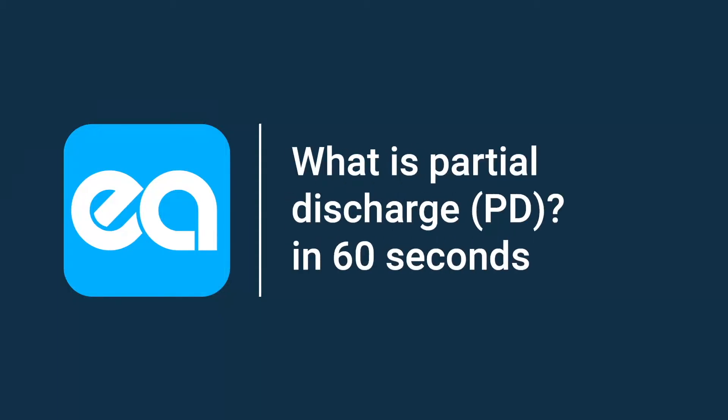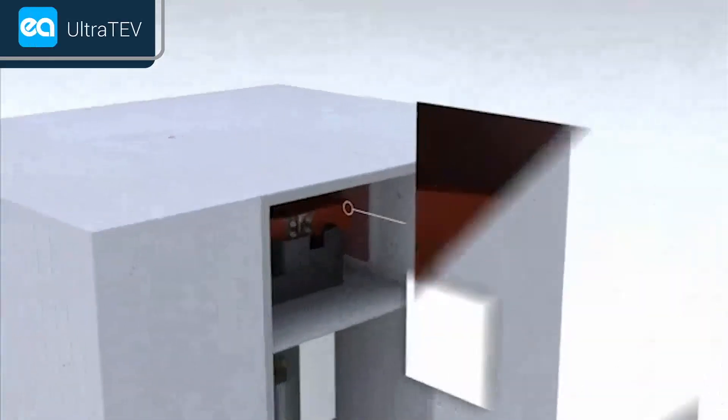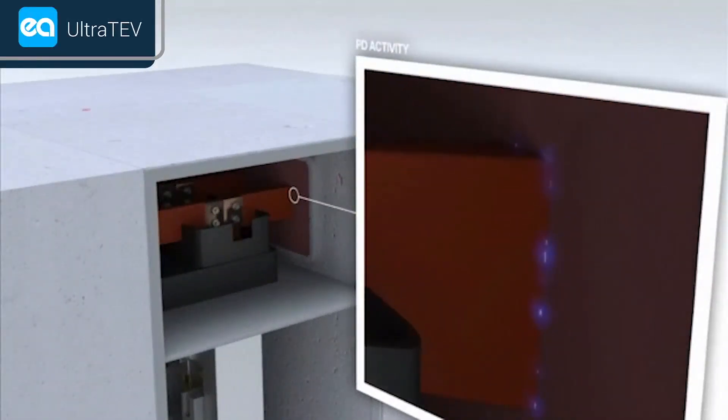What is PD? Partial discharge is an electrical discharge or spot that bridges a small portion of the insulation between two conducting electrodes. We call this PD activity.